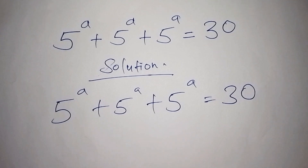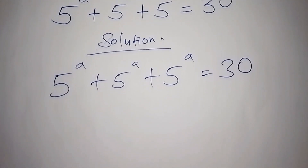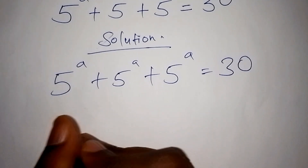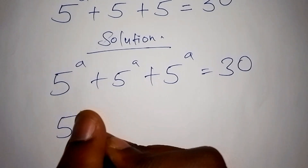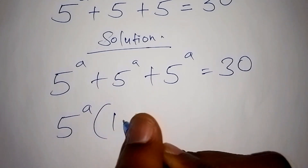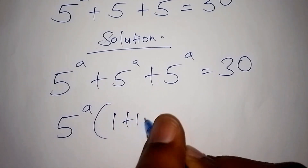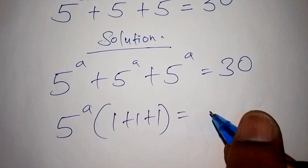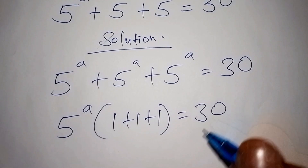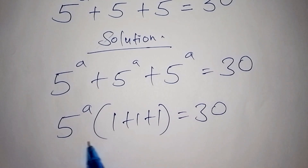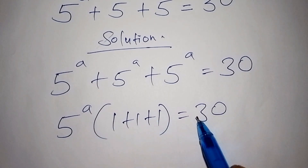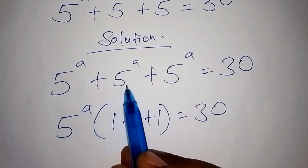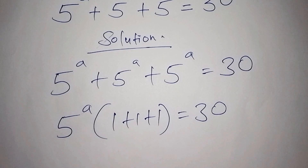The first thing we need to do is 5 to the power of a can be factorized by having 5 to the power of a, then into bracket, 1 plus 1 plus 1, is equals to 30. When we expand the whole of this, we shall have 5 to the power of a plus 5 to the power of a plus 5 to the power of a.